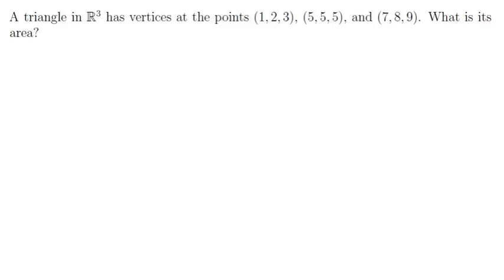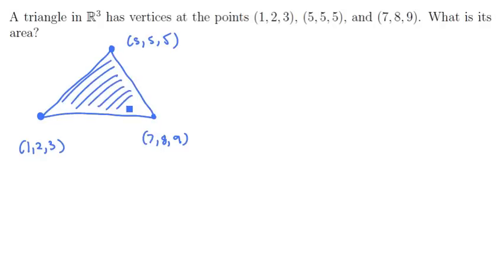Well, let's start this problem by just making a crude picture, just something to give us some intuition. We've got a point here at (1, 2, 3) in space. We have a second point at (5, 5, 5), and the third point at (7, 8, 9), obviously not to scale. Between these three points, there's a triangle and we're trying to find the area of this geometric shape.